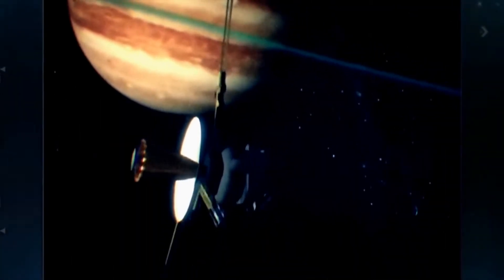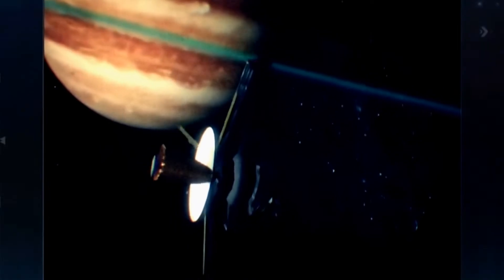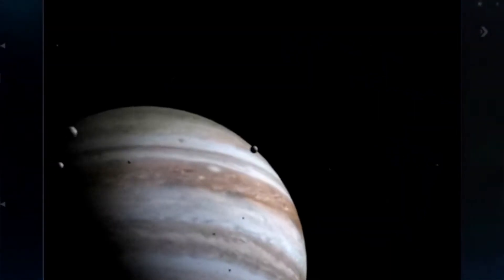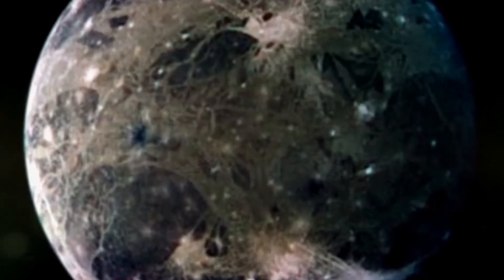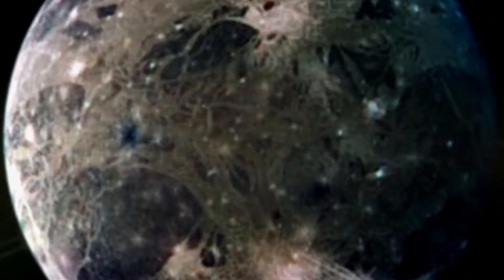Ganymede is about the same age as Jupiter itself—more than four and a half billion years old. The structure of the satellite's crust probably resembles a similar structure on Earth.